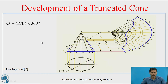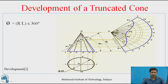Let us see one example of a cone. The cone is resting on the HP, and it is cut with the help of a cutting plane or section plane which is inclined with HP at an angle of 45 degrees, passing through a point at a certain distance below the apex. This 60 mm is the true length of the generator — from the apex to the base circle.